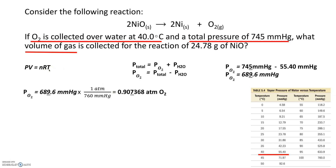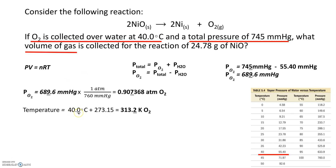Temperature must also be converted. Whenever we deal with gas laws, we have to use the absolute temperature scale — Kelvin — as extrapolated by Charles's law. We convert 40 degrees Celsius to Kelvin by adding 273.15, treating 273.15 as exact. Using 40.0 for significant figures, the trailing zero after the decimal counts as a sig fig. Following the rules for addition and subtraction, we go to the tenths place, giving us our temperature in Kelvin.